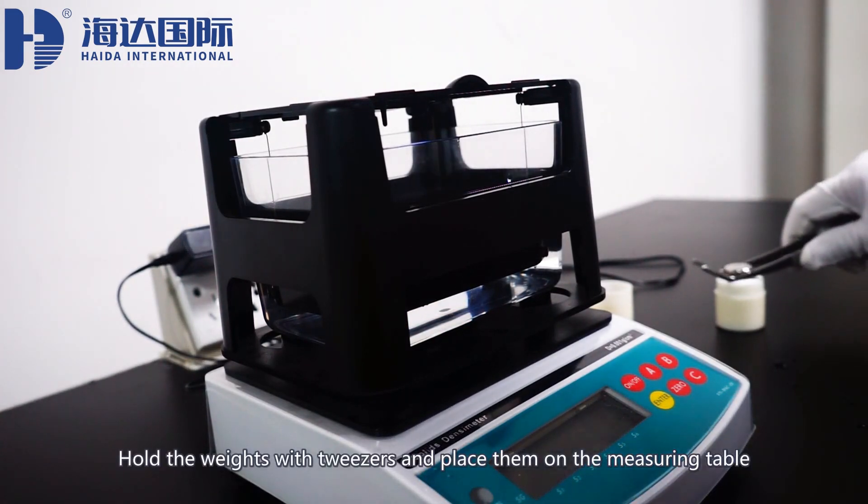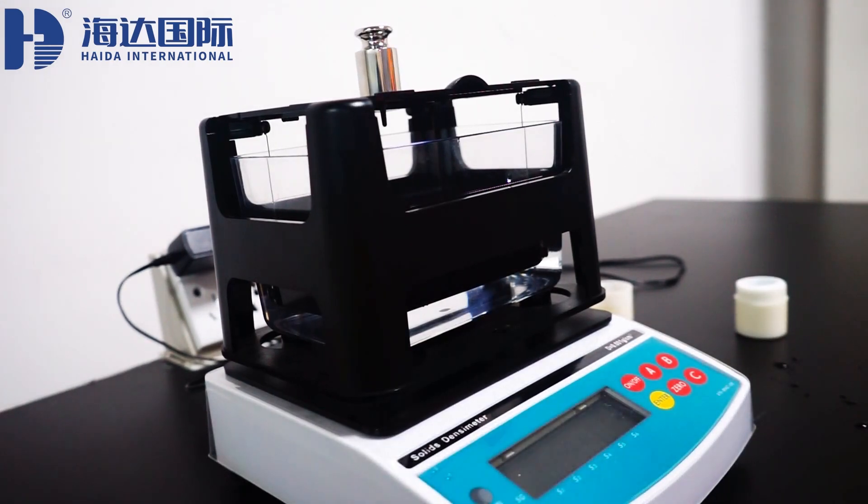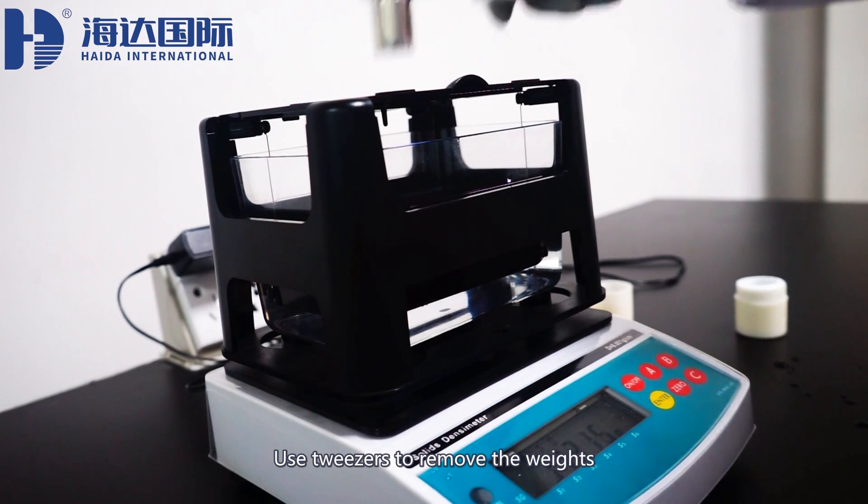Hold the weights with tweezers and place them on the measuring table. Wait for the instrument to show the reading, and use tweezers to remove the weights.